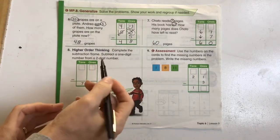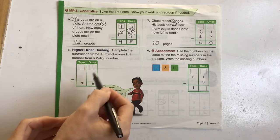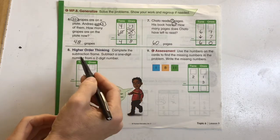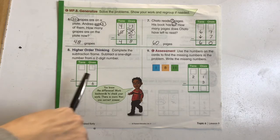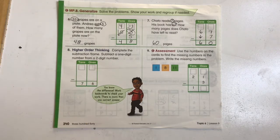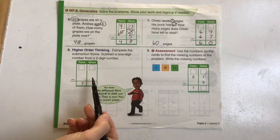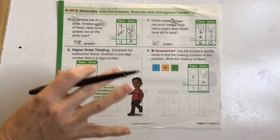Our higher order thinking. Complete the subtraction frame. This is our subtraction frame. Subtract a one-digit number from a two-digit number. So the students can actually go through and figure out what they want to do. But our difference here is 76. So we have to think of some things that we can add up, and we're going to need to regroup is basically the whole premise of what we're doing here.